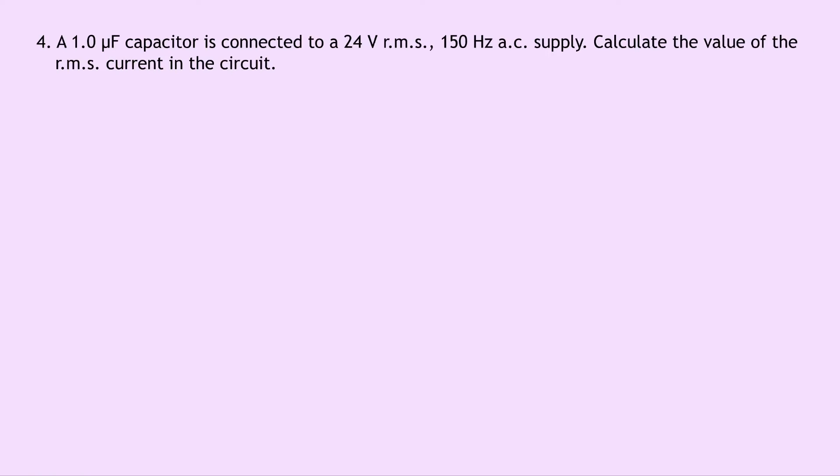So we need to use another equation other than XC equals V over I to find the capacitive reactance first. So we can do that using the other equation involving capacitive reactance in terms of the frequency and the capacitance. So we first need to find XC and then the current I.